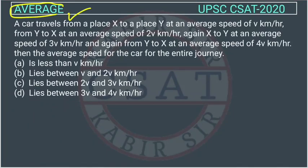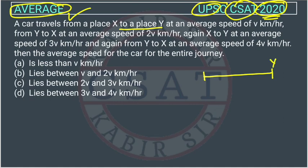This is an average question asked in UPSC CSAT 2020. A car travels from a place X to a place Y — suppose this is place X and this is place Y — at an average speed of V.